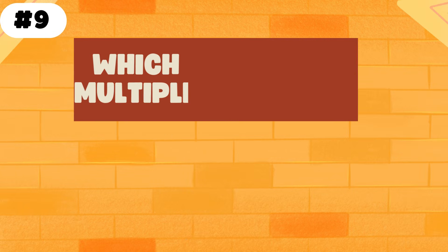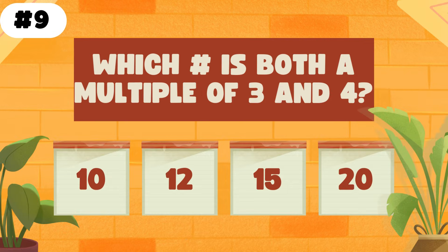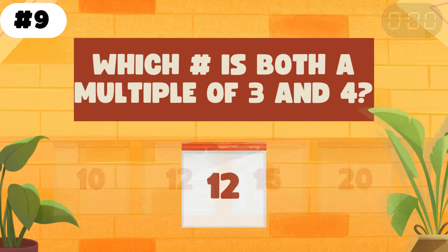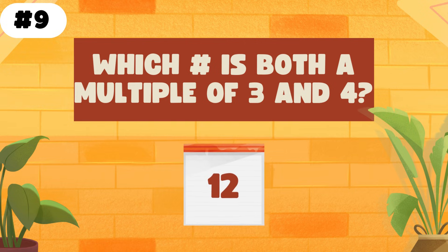Which number is both a multiple of 3 and 4? Did you get it? The answer is 12.